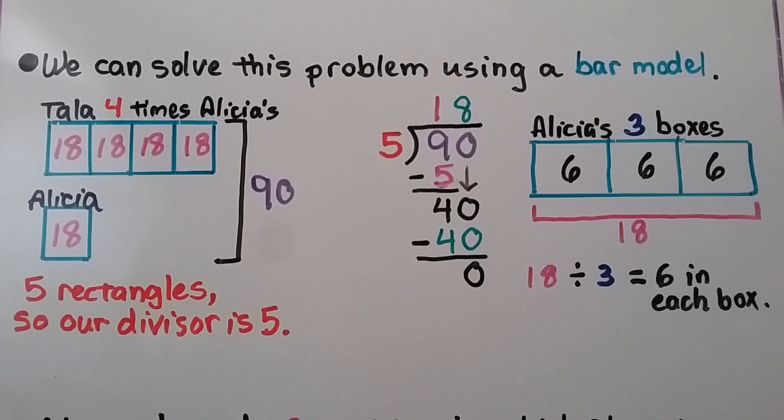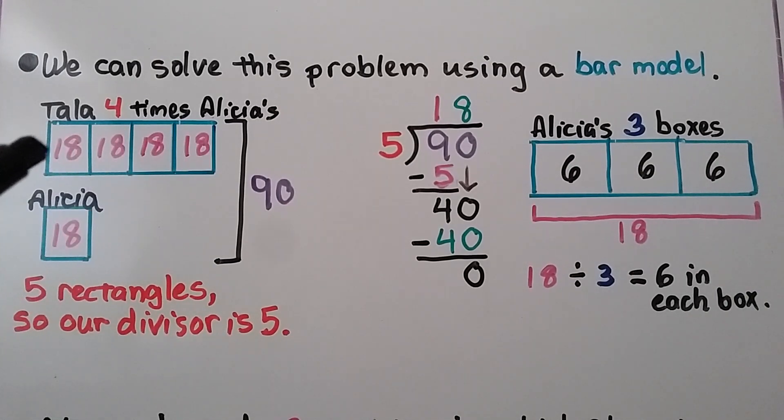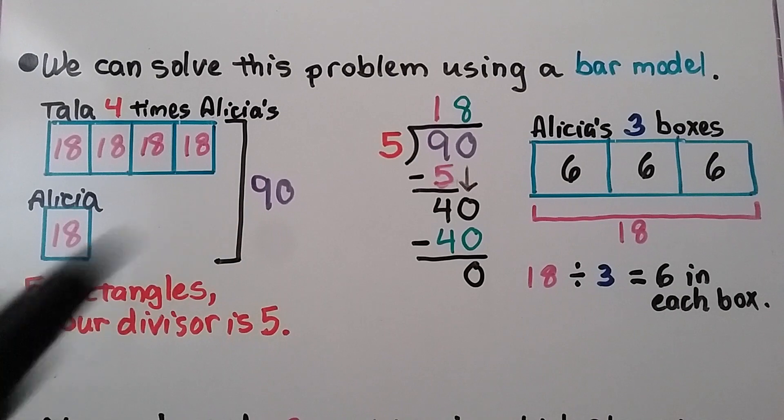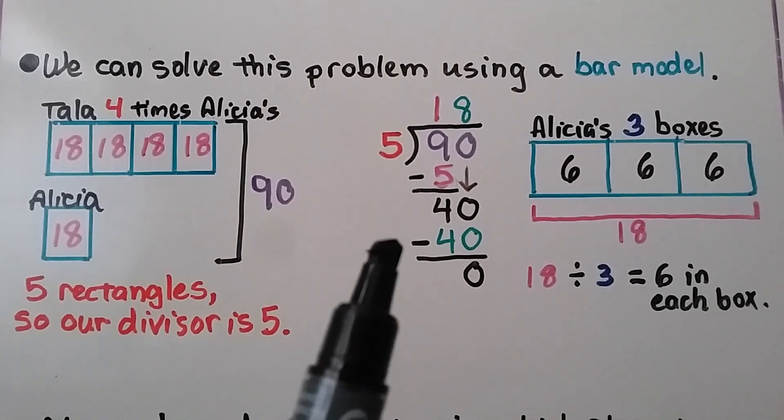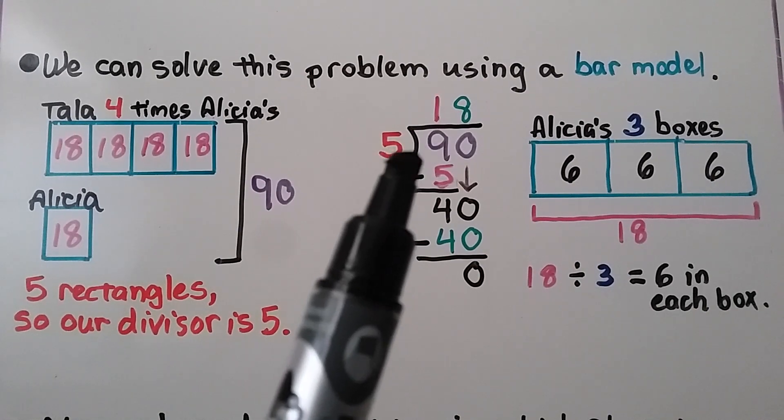We can solve this problem using a bar model. We make 1 rectangle for Alicia's amount and 4 for Tala's, because she's 4 times Alicia's 1. So we have 5 rectangles, 5 parts. So our divisor is going to be 5. We know they baked 90 in all. We can do 90 divided by 5. We ask ourselves how many times can 5 fit into 90?